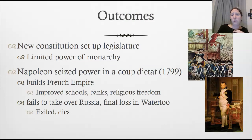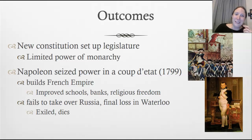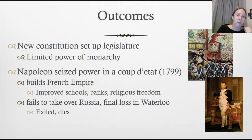What were the outcomes of the French Revolution? A new constitution set up a legislature with elected representatives to limit the power of the monarchy, but it didn't last long. A short man called Napoleon Bonaparte seized power in a coup d'état in 1799. At first he made improvements for France — improving schools, banks, and religious freedom.